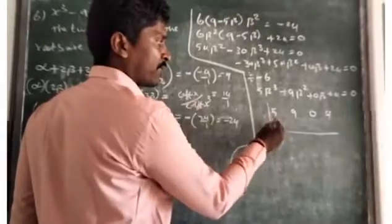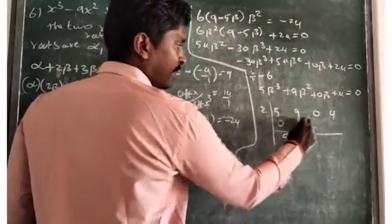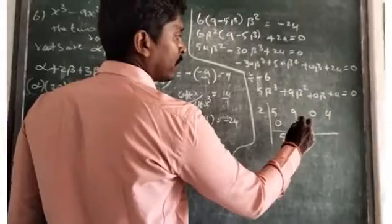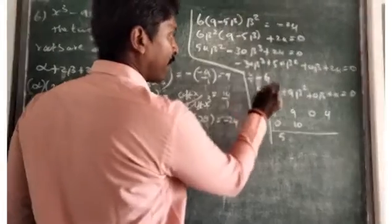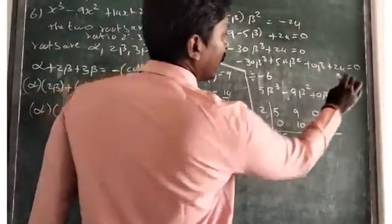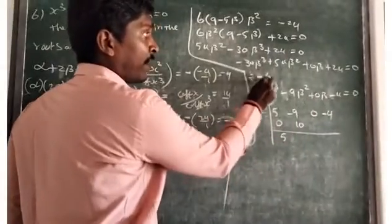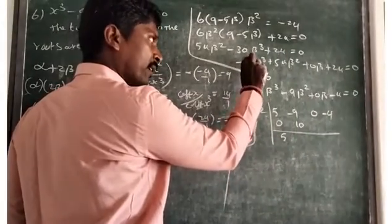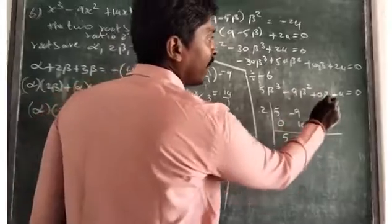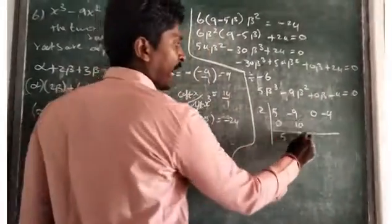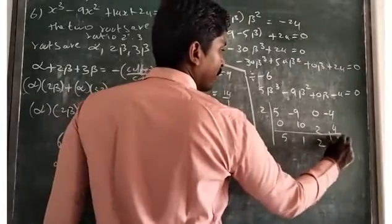Applying synthetic division with 2: bring down 5; 2 times 5 is 10; 10 plus minus 9 is 1 — wait, working through: we get remainder 0, confirming beta minus 2 is a factor. The remaining quadratic factor is 5 beta squared minus 9 beta plus 2, which when factorized gives imaginary roots. So the real root from beta minus 2 equals 0 is beta equals 2.